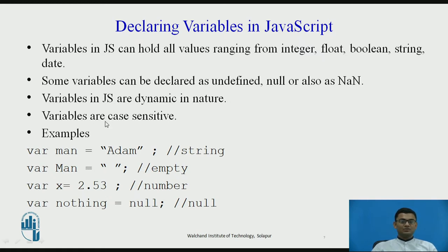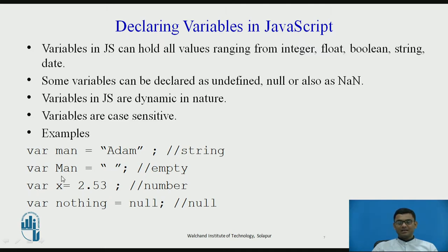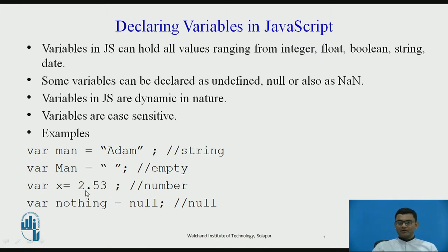Variables are also case sensitive. So 'man' in small letters and 'Man' with a capital M are two different variables. The first variable holds the value 'Adam', while the second variable Man with capital M is empty — it does not hold any value, yet if you check its type it will still show string. Variable x is holding a number, and variable nothing is holding a null value because I have assigned null to it. This is how we declare variables in JavaScript.